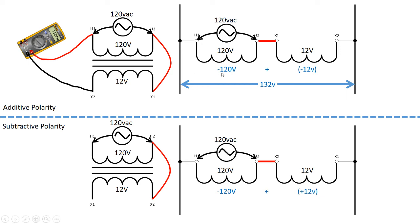So previously in our additive, we had negative 120 plus negative 12 gave us a higher overall result. But if we look now at our subtractive down here, negative 120 plus positive 12, this will actually give me a less than we started with voltage, and we should see somewhere around 108 volts on this connection.